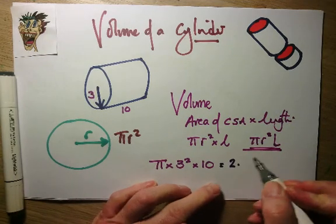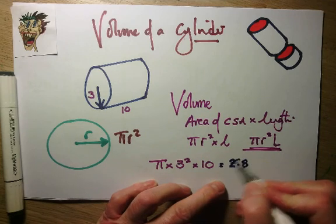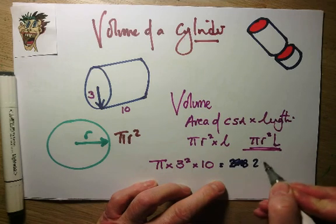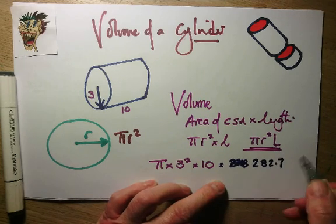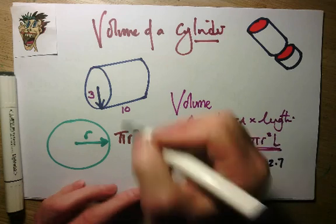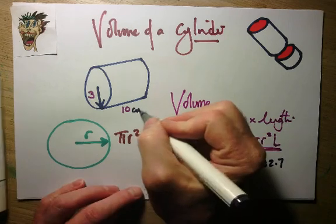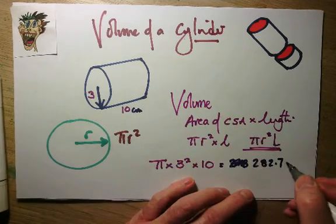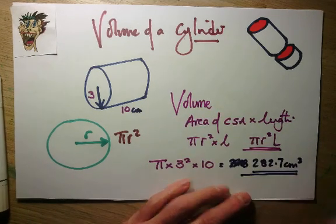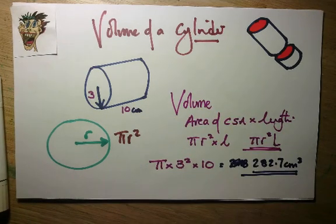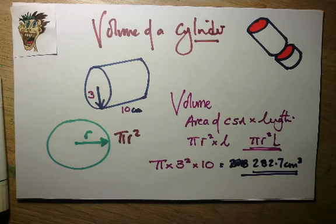The answer is 282.7 — let's call the units centimetres cubed. So that's how you work out the volume of a cylinder.